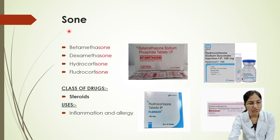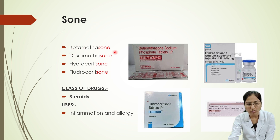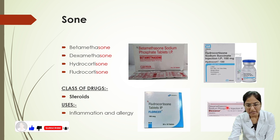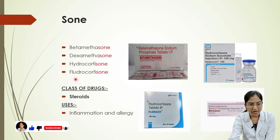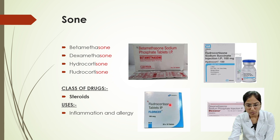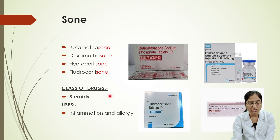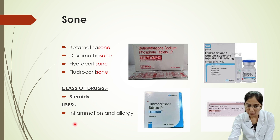Next, we'll look at drugs whose names end with '-zone'. Examples include betamethasone, dexamethasone, hydrocortisone, and fludrocortisone — all ending with '-zone'. These drugs belong to the class of steroids, and they are prescribed for inflammation and allergy.